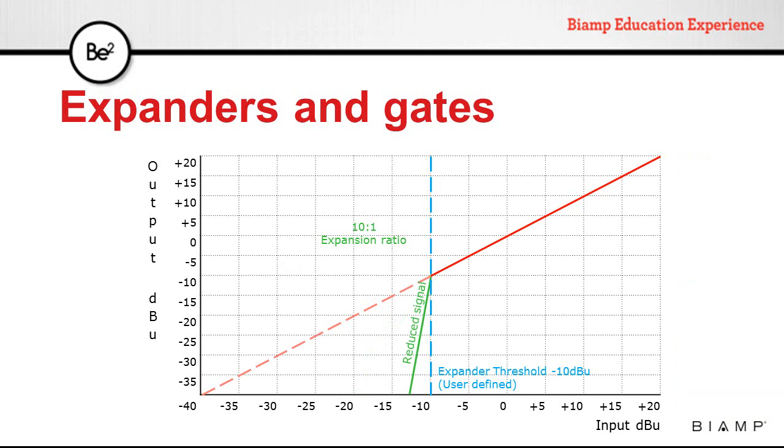Increasing the ratio even more makes the reduced signal diagonal line more vertical in the graph. This will make level changes more abrupt to the point that we are almost cutting signals below a certain level.